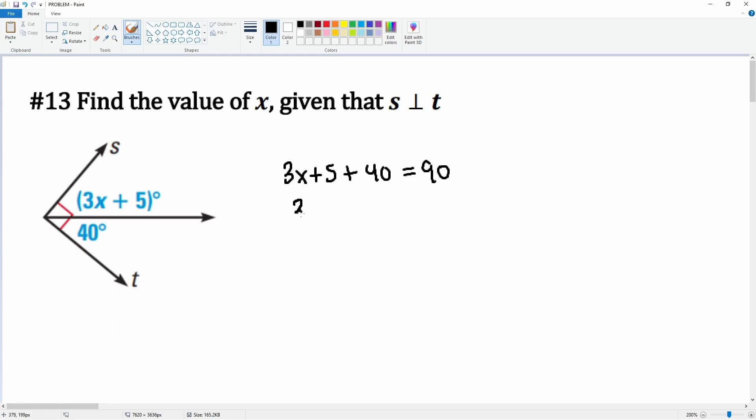Combining some like terms: 3x plus 45, because 5 plus 40 is 45. We have to get the 3x alone, so we're going to subtract 45 from both sides. This cancels, leaving you with 3x on the left is equal to 45.